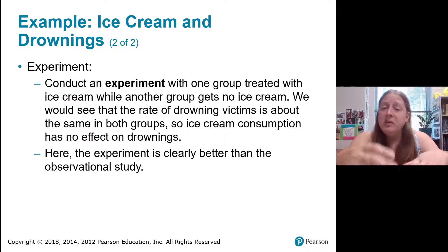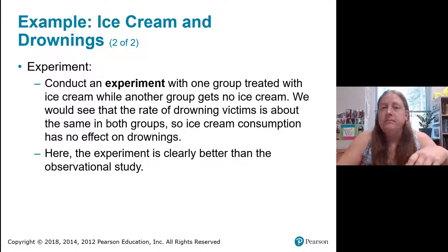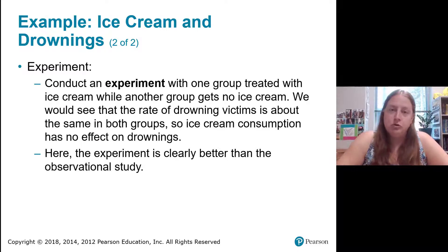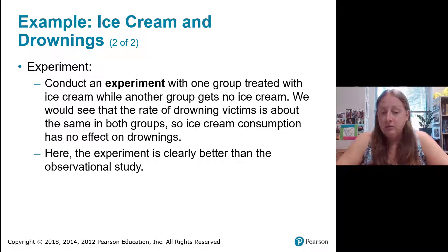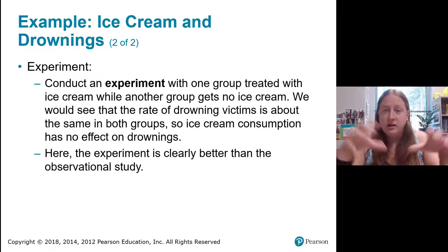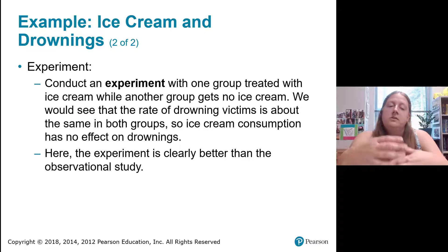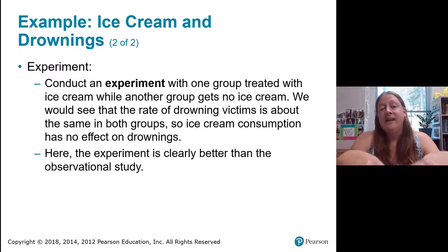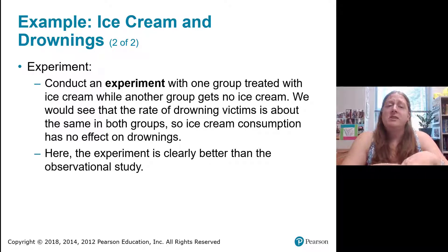If we were to conduct this as an experiment instead of an observational study, we would take two groups of people, give one group ice cream and not the other, then observe and count how many people drowned from each group. If the group that ate ice cream had more drownings, we'd have more basis to say these things are connected without an underlying variable. Experiments are a much better method than observational studies in many cases, however they're not always ethical or possible — in education especially, we can't necessarily do experiments as readily.